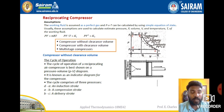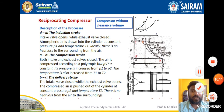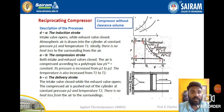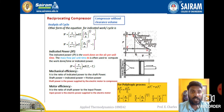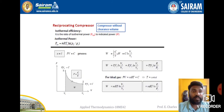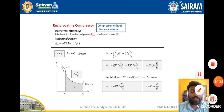For the polytropic process, n varies from one system to another. We covered the compressor without clearance volume, including the description of processes, the work done formula, mechanical efficiency, motor efficiency, and indicated power terminologies. In my next video, I will teach the compressor with clearance volume. Thank you.